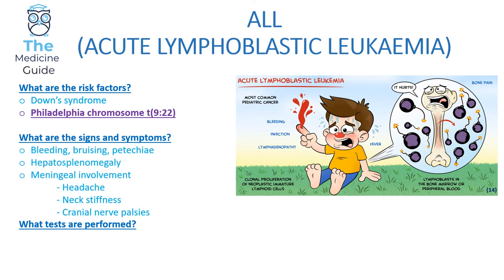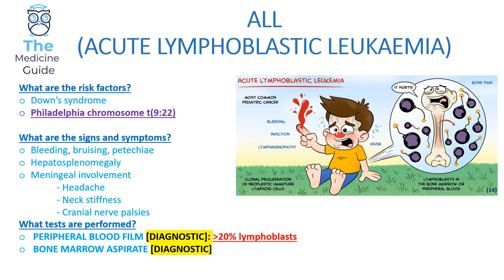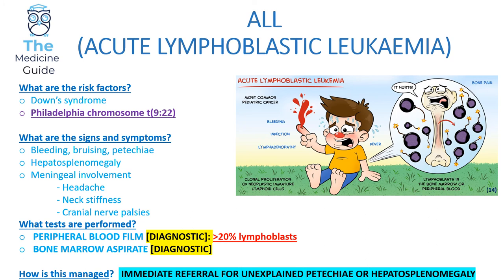A child will present with bleeding, bruising, and petechiae. They will experience hepatosplenomegaly — a palpable abdominal mass in the right and left upper quadrant regions — and also meningeal involvement, so they'll complain of headaches, neck stiffness, and cranial nerve palsies. A peripheral blood film and bone marrow aspirate is diagnostic, with more than 20% lymphoblasts present. We need to immediately refer children presenting with unexplained petechiae or hepatosplenomegaly.